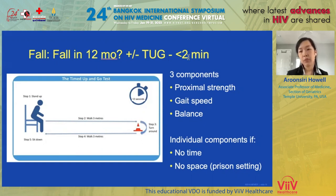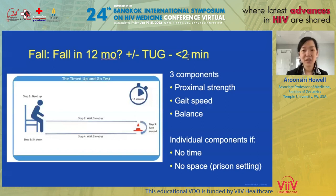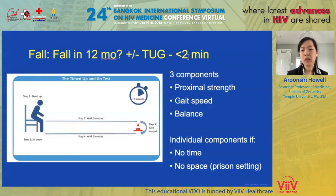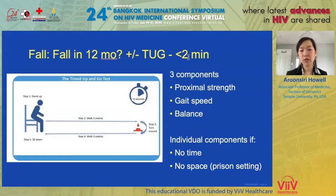If you're limited by time or space, you can break down the Timed Up and Go test into its individual components. For example, I've worked with clinicians in prison settings where patients come in shackled at their ankles. In the exam room, you can ask them to get up from the exam table without using their hands — still testing proximal muscle strength. Then ask them to turn around in front of you while shackled — still testing balance, even without doing the whole test.